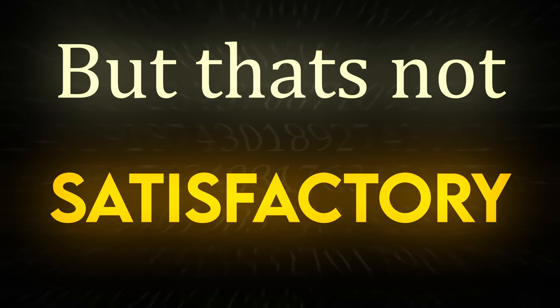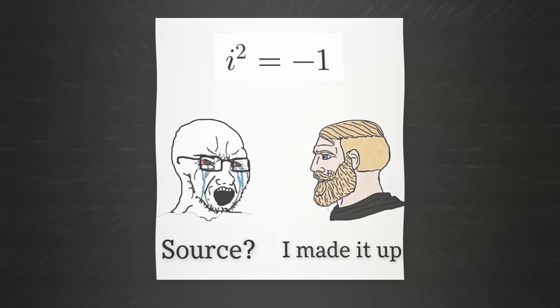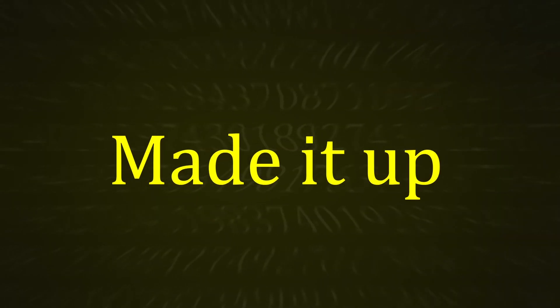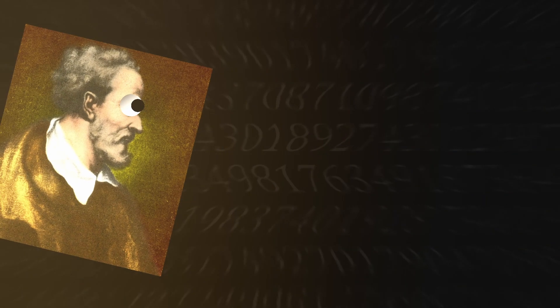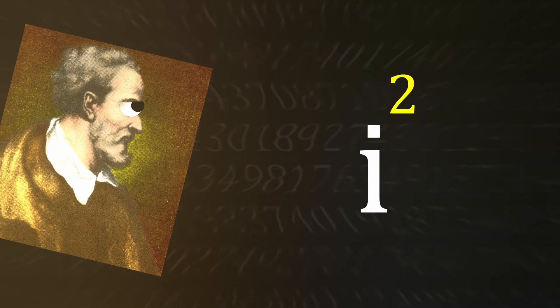But that's not satisfactory. The next step is the source of a lot of memes and surface-level absurdity. Mathematicians just made it up. Yeah, nothing else, they just made up a constant denoted by the letter i, standing for imaginary, which, when squared, gives a value of negative 1.